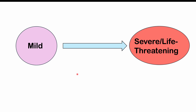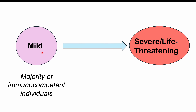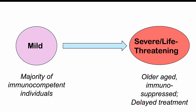After transmission and a one-to-two-week incubation period, anaplasmosis presents across a spectrum from mild to severe and life-threatening. Mild symptoms occur in the majority of immunocompetent individuals. More severe cases occur in older patients, immunosuppressed patients — such as those with AIDS, diabetes, or on immunosuppressive treatment — and in anyone with delayed treatment. Some cases that start mild can worsen over time if not addressed.